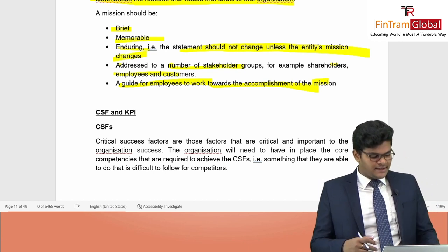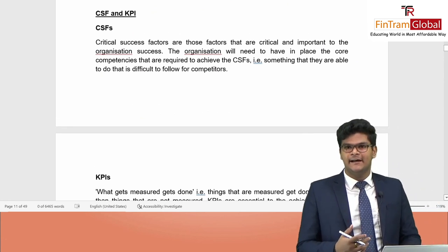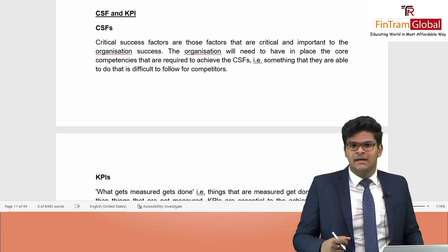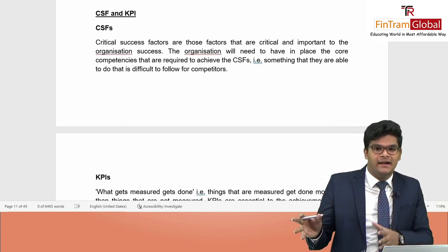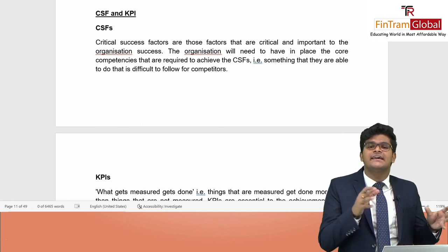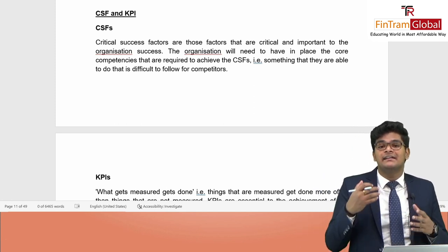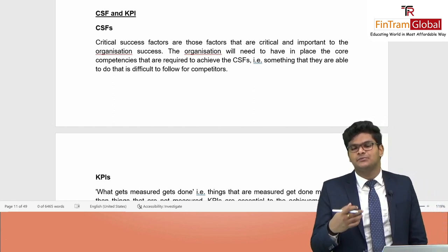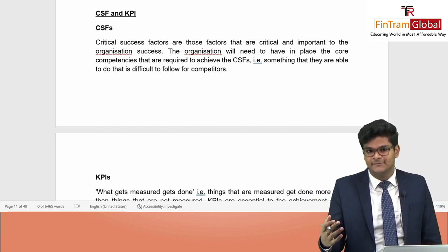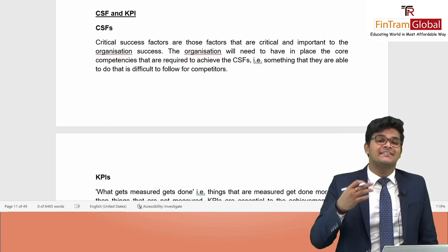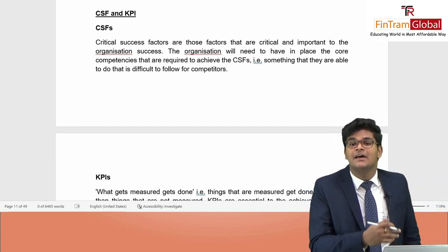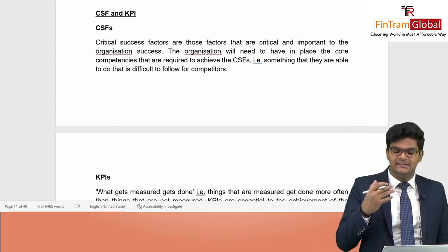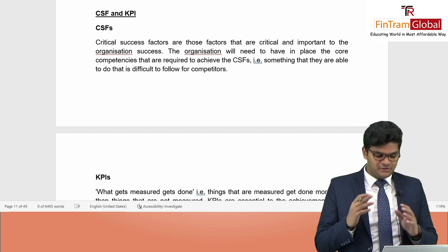To achieve organizational objectives, the organization must excel in some critical areas known as Critical Success Factors (CSFs). To measure the extent to which we have excelled in these areas, we determine Key Performance Indicators (KPIs). That is basically the idea behind CSFs and KPIs.